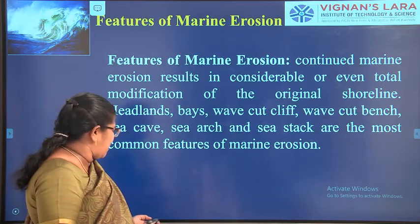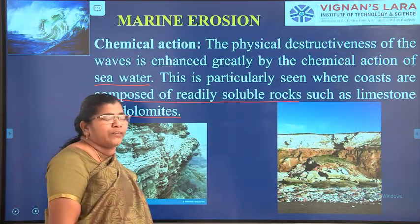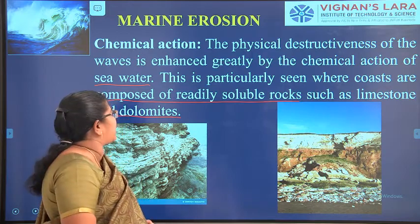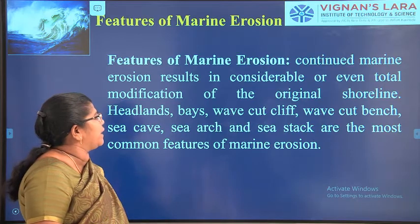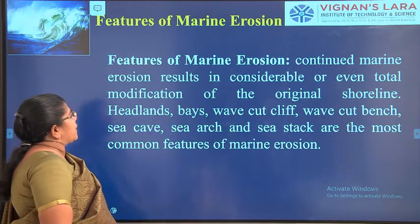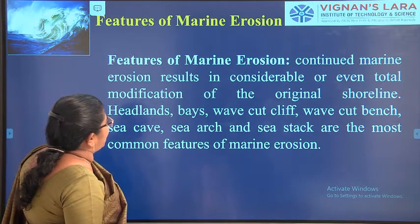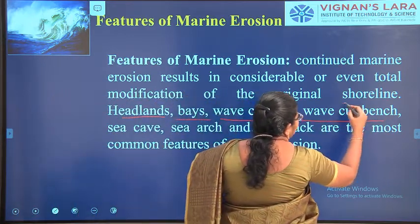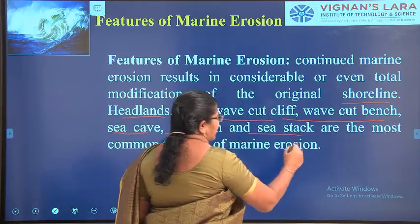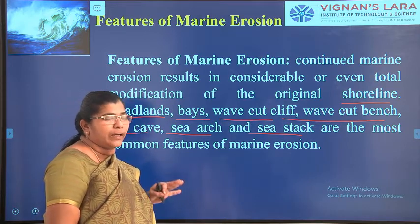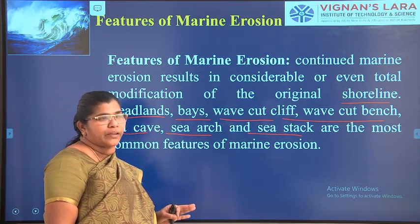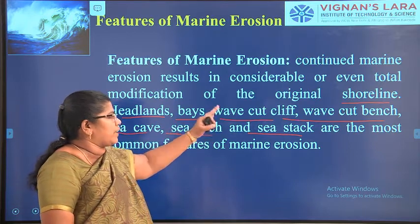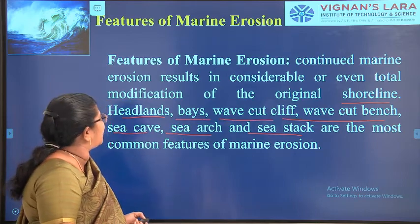Now we will see the features of marine erosion. We already saw the four processes: hydraulic action, abrasion, attrition, and chemical action. The main features formed by marine erosion are: shoreline, headlands, bays, wave-cut cliffs, wave-cut benches, sea caves, sea arches, and sea stacks.